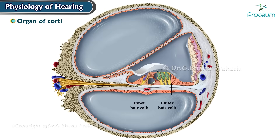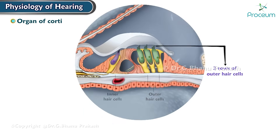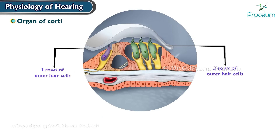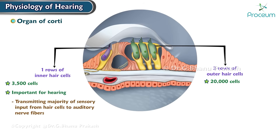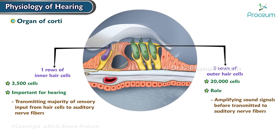The hair cells in the organ of Corti are arranged in four rows: three rows of outer hair cells and one row of inner hair cells. The outer hair cells are more numerous, with about 20,000 cells, while the inner hair cells are fewer, with only around 3,500 cells. However, despite being fewer in number, the inner hair cells are more important for hearing, as they are responsible for transmitting the majority of sensory input to the auditory nerve fibers. The outer hair cells play a critical role in amplifying the sound signals before they are transmitted to the auditory nerve fibers.